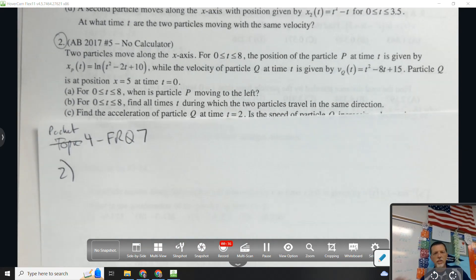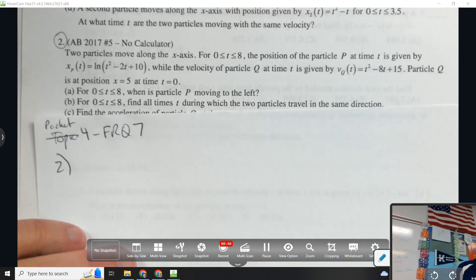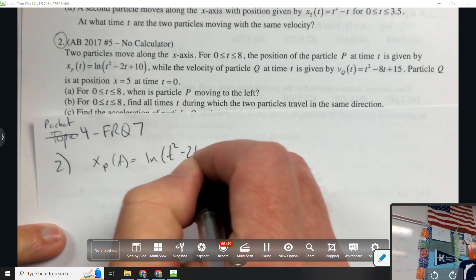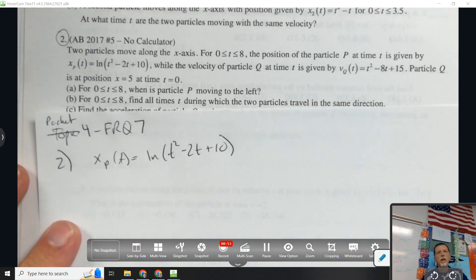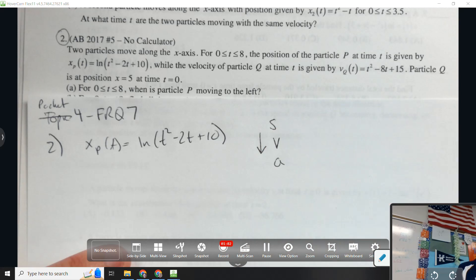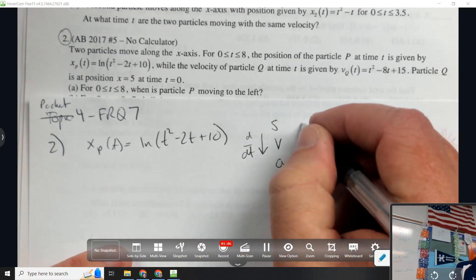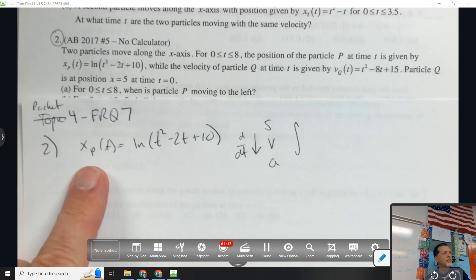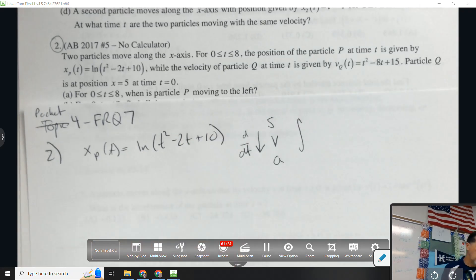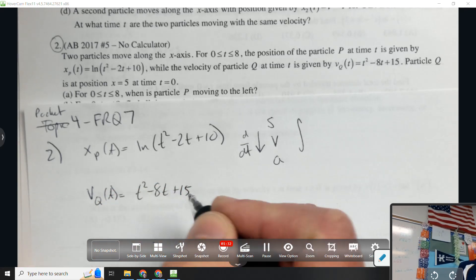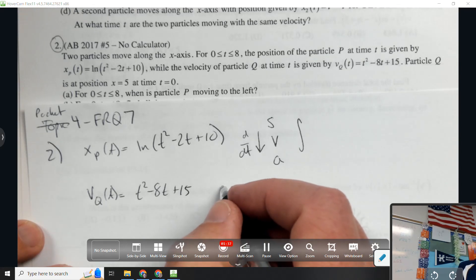Two particles move along the x-axis, so we're going left and right. For time between 0 and 8, the position of particle P is given by X_P = ln(t² - 2t + 10). The velocity of particle Q is t² - 8t + 15, and particle Q is at position x = 5 when t = 0.